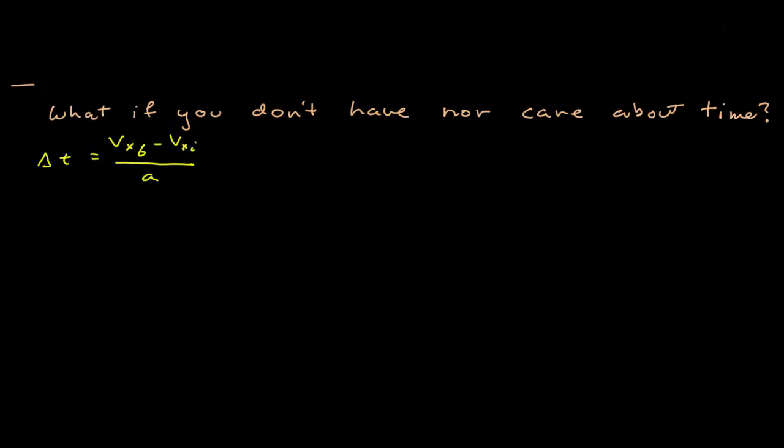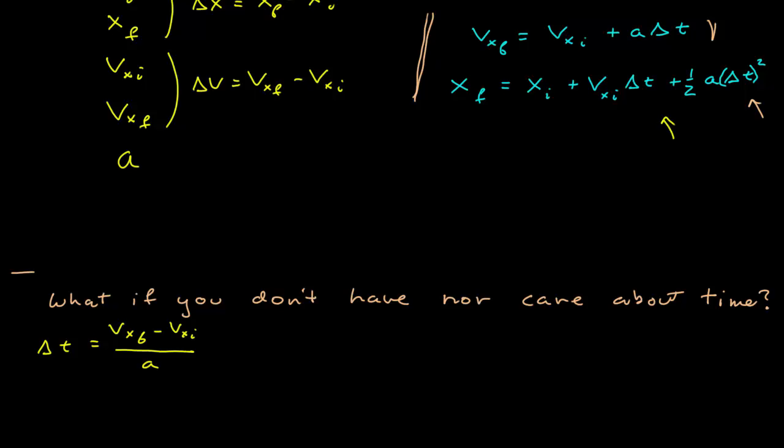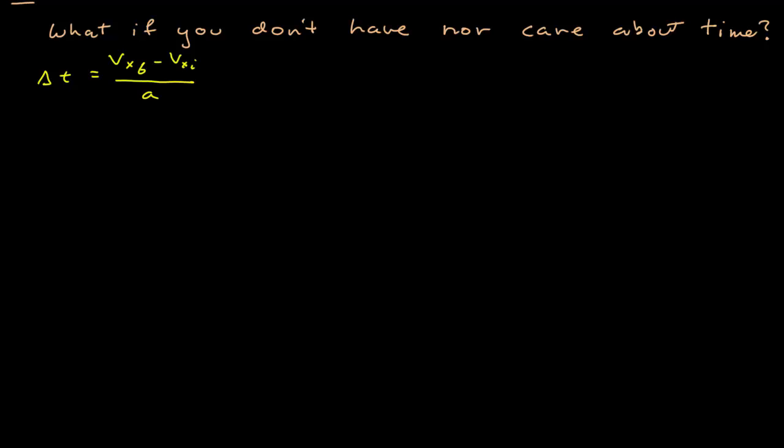So now I'm going to substitute that into this one, where I have, so then I'm going to have delta x, I'm going to bring the x initial on the other side, and that gives me delta x again, and then, and then, so vx initial times delta t, which is vx final minus vx initial divided by a, okay, and then plus one half a t squared, so that's vx f minus vx initial squared over a squared.